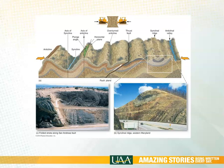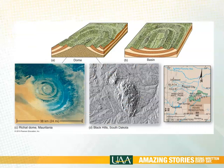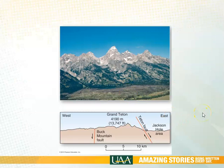Basins and domes include features like the Black Hills of South Dakota, where the geology has been bent upwards or downwards by tectonic activity and then eroded, creating essentially rings of mountains. Faulting, especially simple faulting, can create really dramatic features like the Great Teton Mountains, which have been thrust upwards.